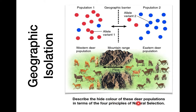I want you to connect this back to our four principles of natural selection — those keep coming up again and again because they are really important. I was not happy with how it went on the quiz when people weren't talking about all four of them, so please take some time right now. Go through all four principles — variation, modification, adaptation, and overproduction — and talk about all four of them for the deer population and how the two coat colors might have evolved.